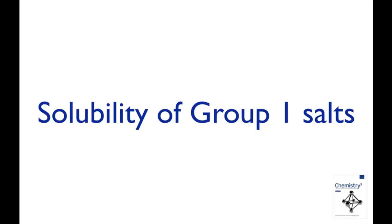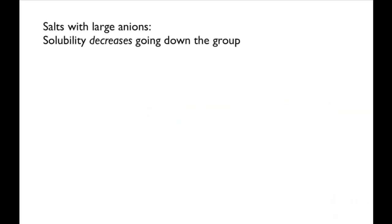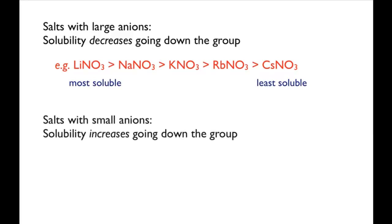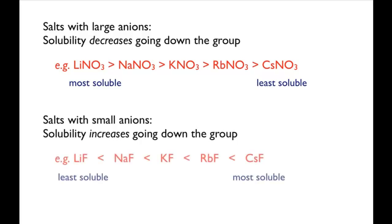Most group 1 salts are soluble in water. For salts containing large anions, such as chlorides, bromides, iodides and nitrates, the solubility generally decreases down the group, and the lithium salts are the most soluble. For salts with small anions, such as fluorides and hydroxides, the solubility increases down the group, and the rubidium and cesium salts are the most soluble.